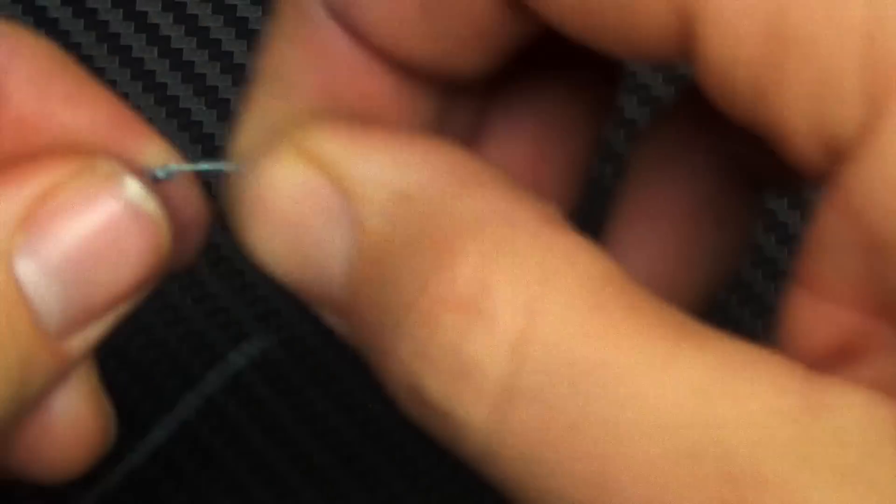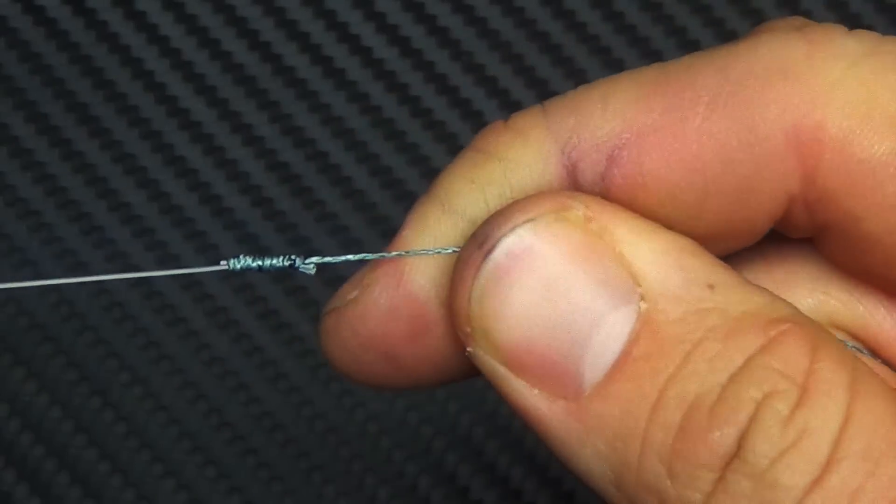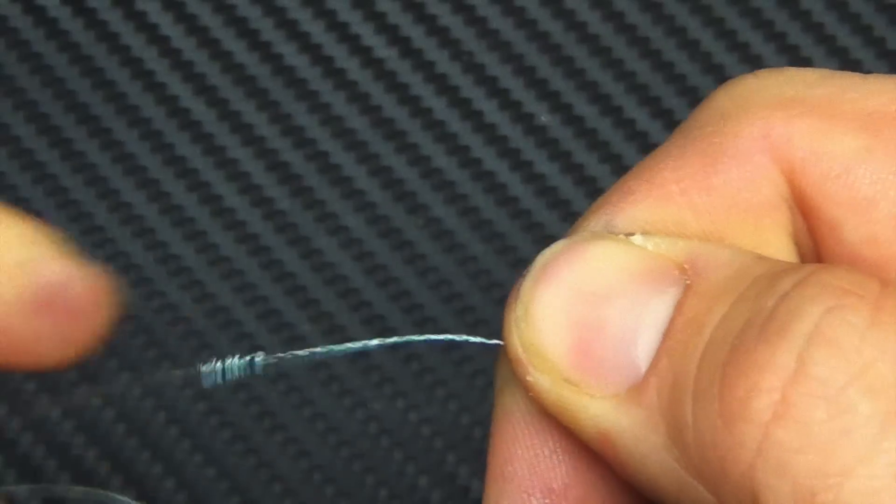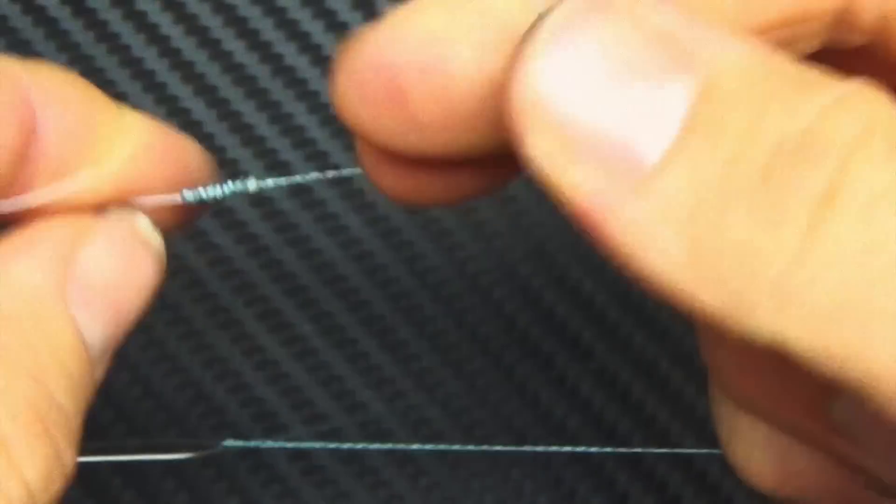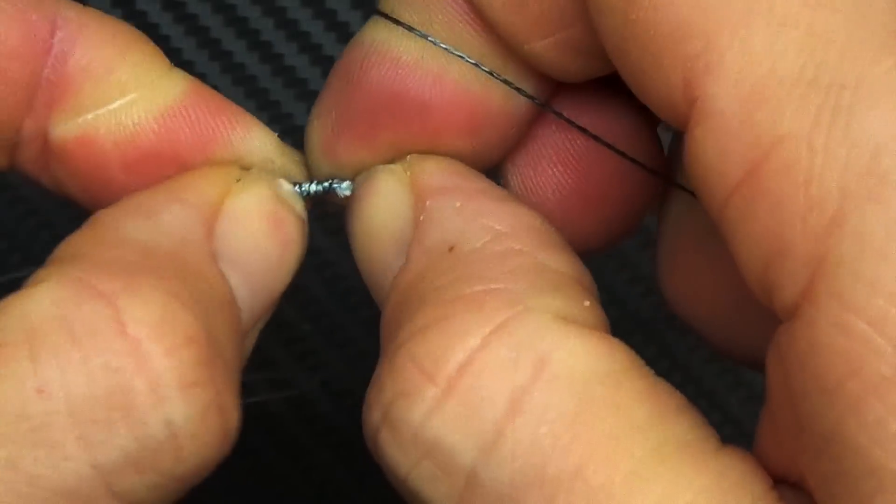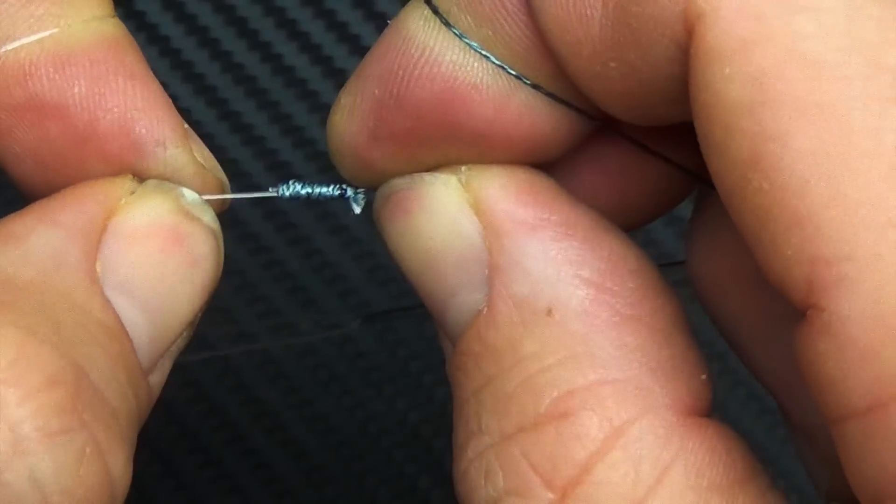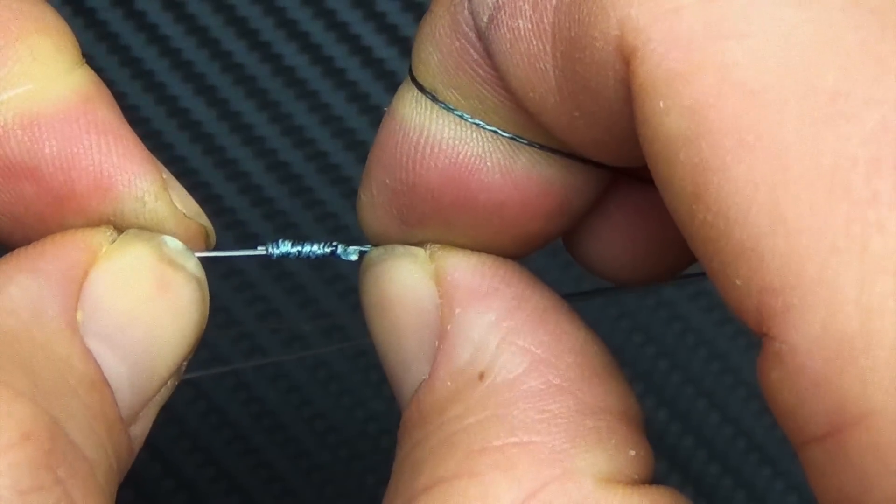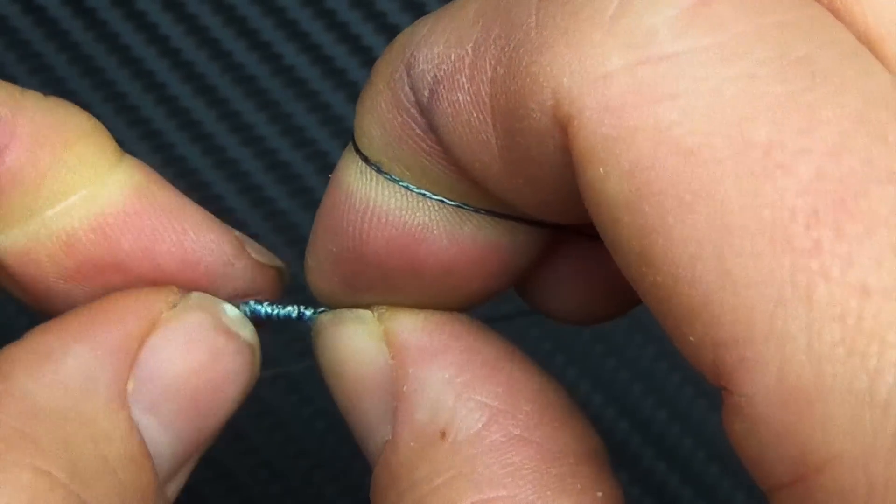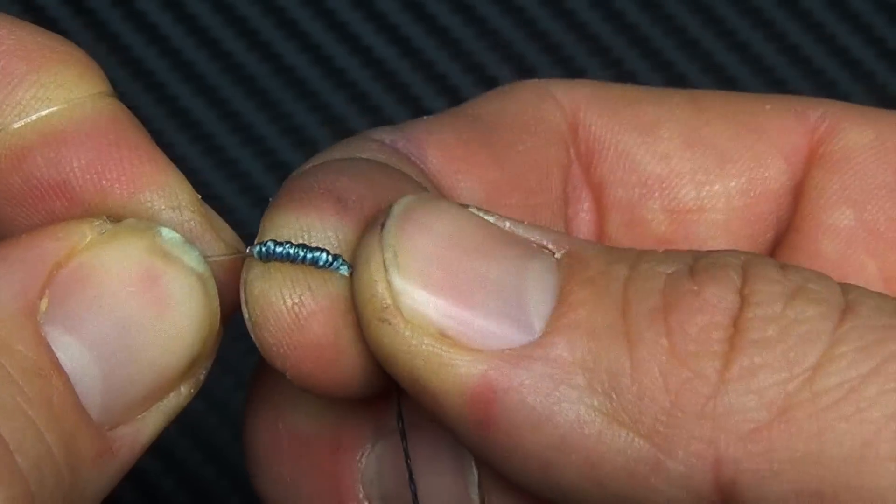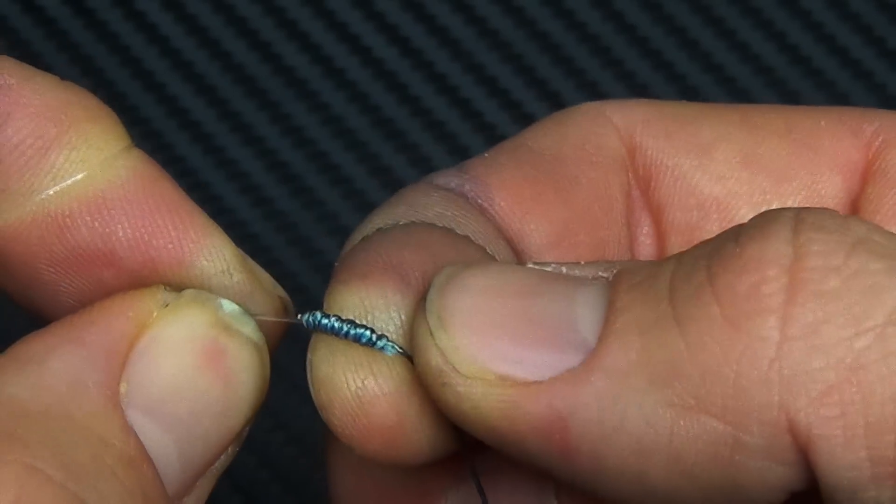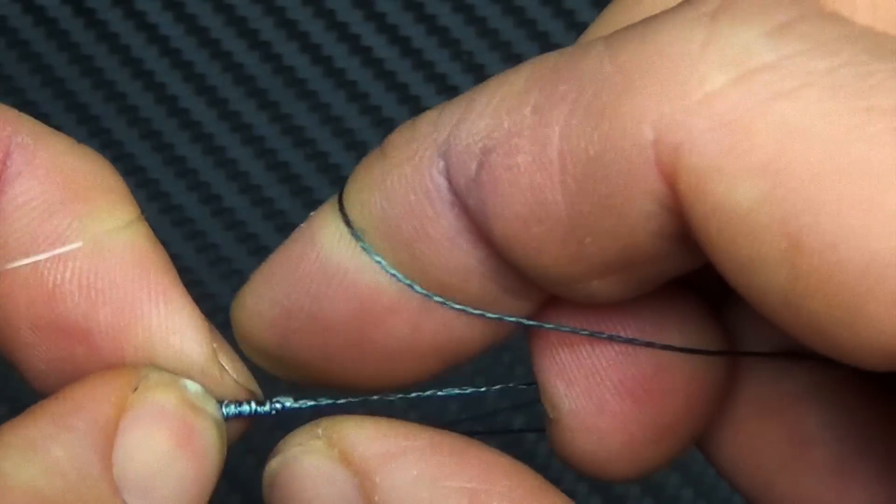So this is your finished product. I didn't trim that one very close, I can trim it even closer. But it's extremely strong and super small and compact, so it's going to go through your guides real easy. The cool thing about it is the fluorocarbon is inside the braid, so you're not going to have to worry about your fluorocarbon hitting the guides and breaking.